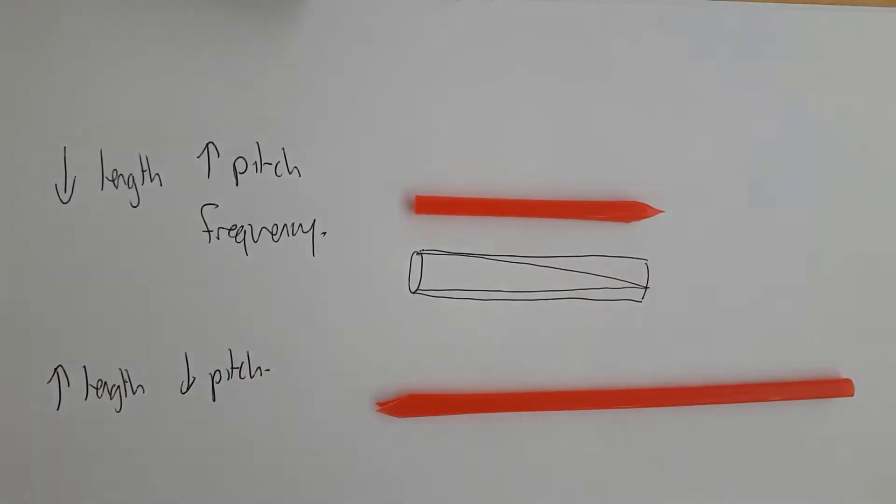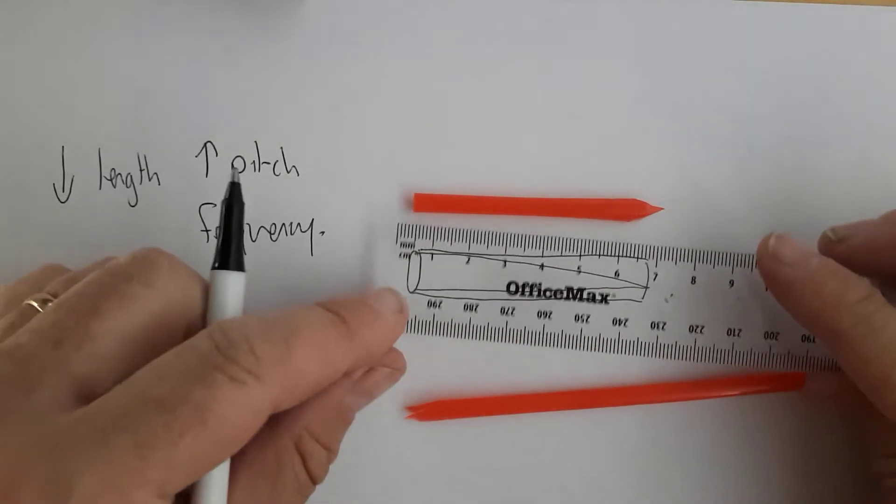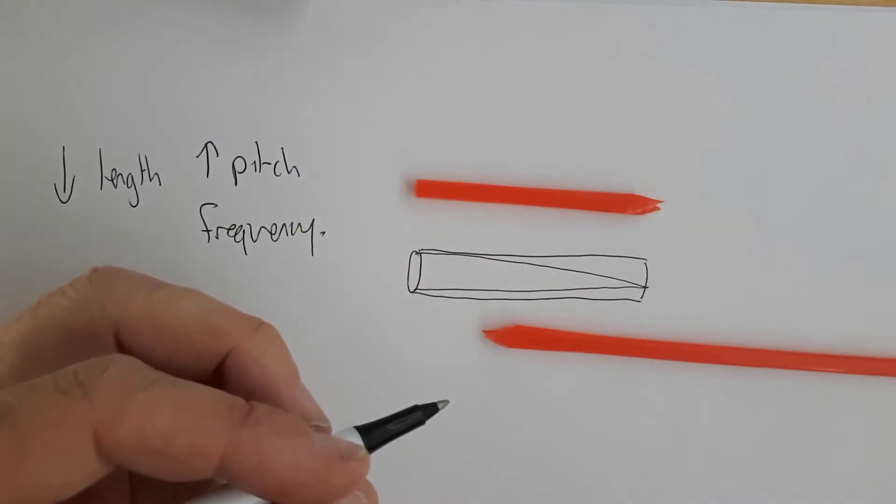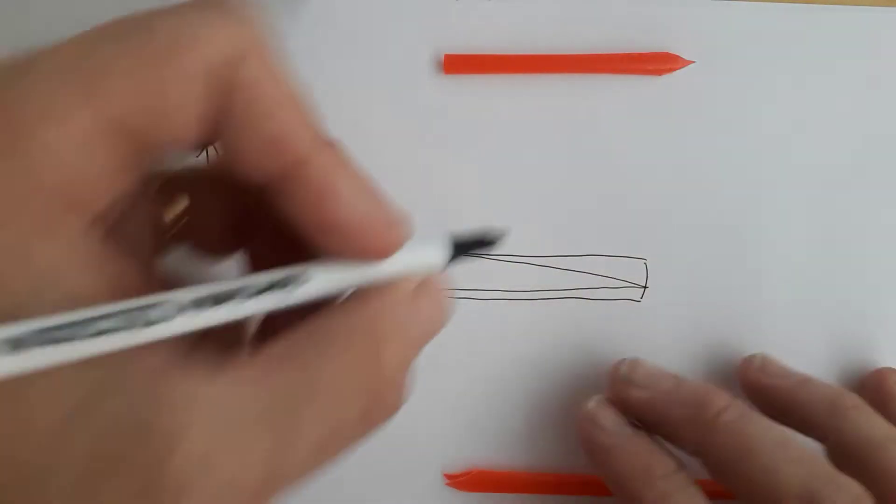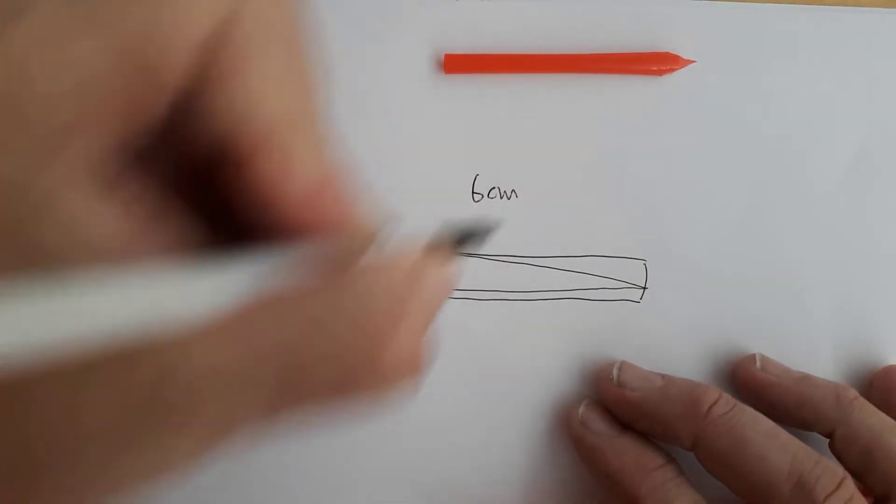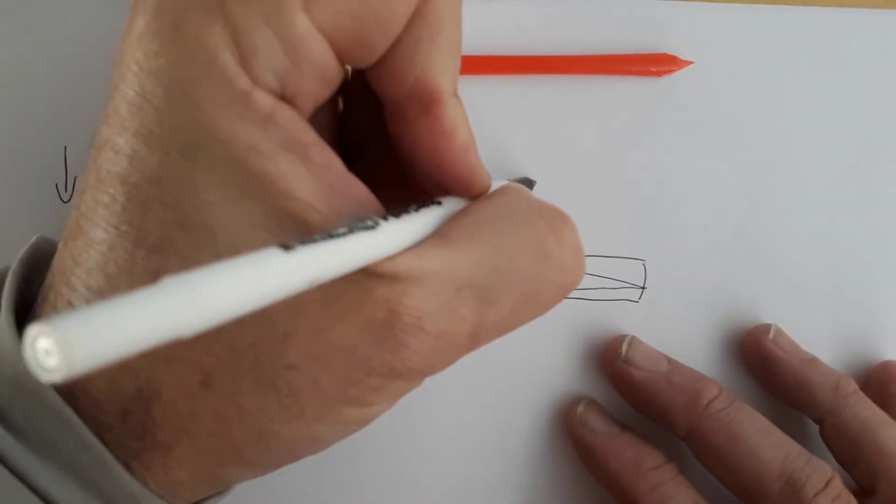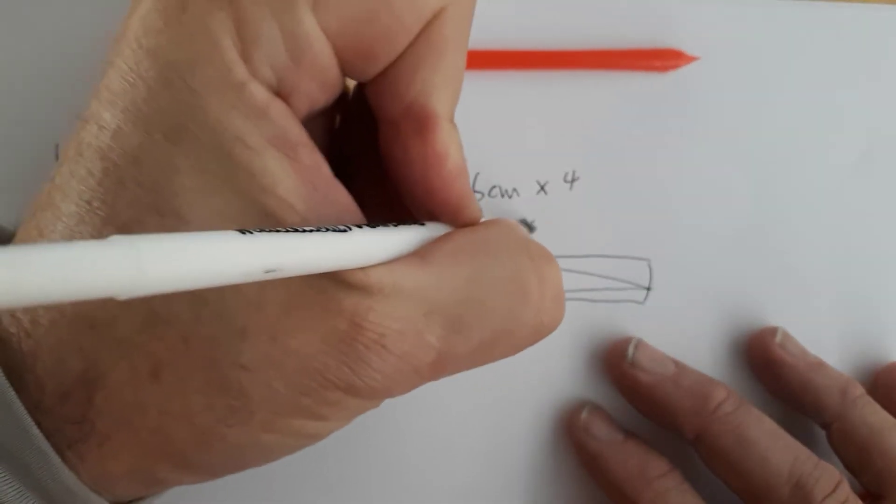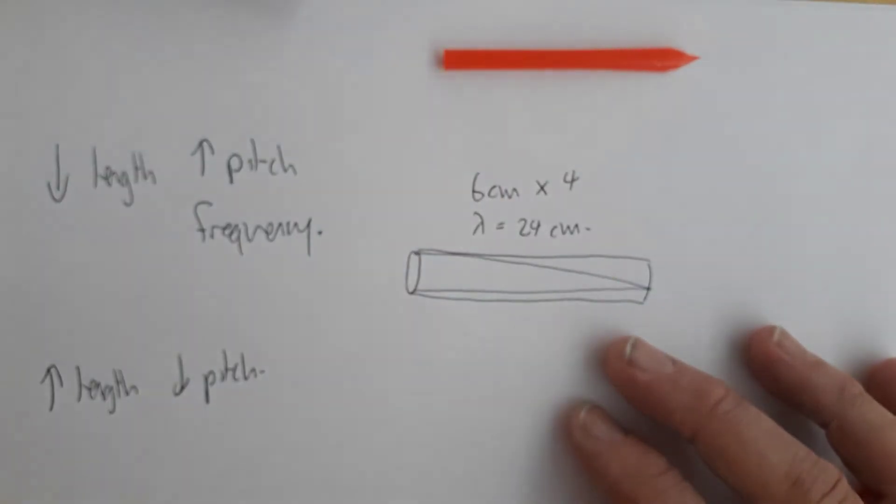In fact, let's do that. Let's measure the length of this pipe. And we're going to say that it's six centimeters. So the length of the pipe is six centimeters. The wavelength is four times that. So the wavelength is going to be 24 centimeters.